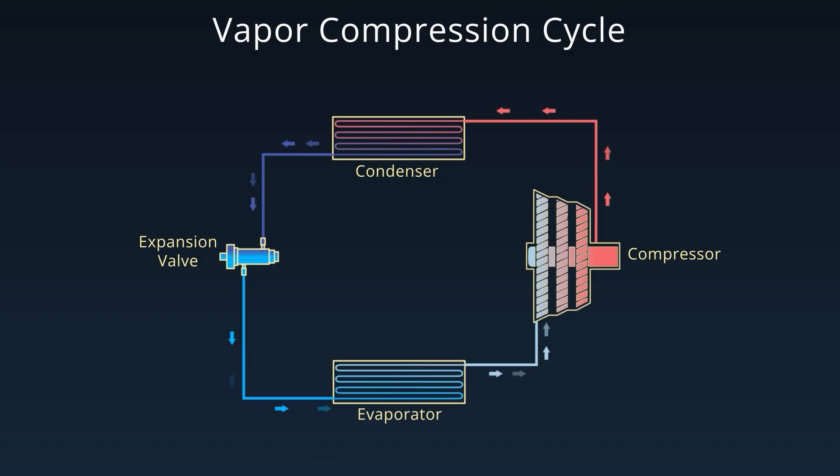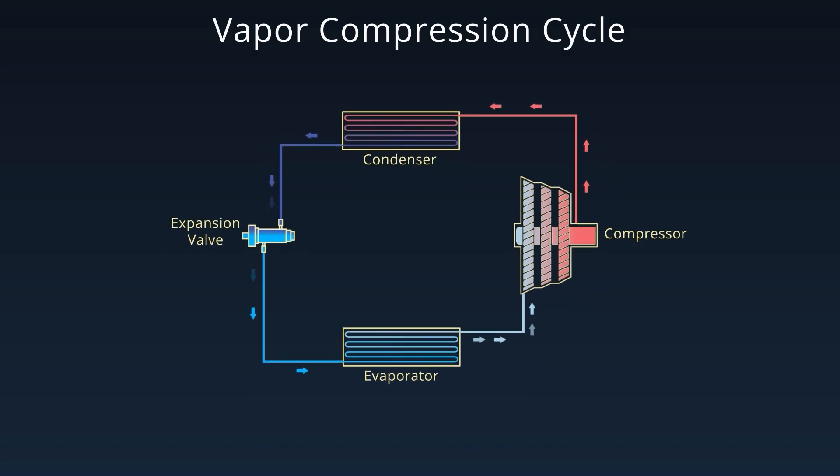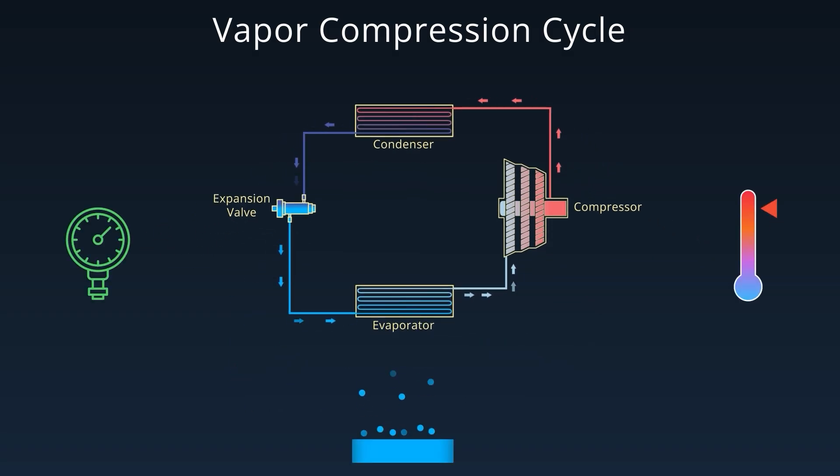The refrigerant moves through these components in a closed loop, changing pressure, temperature, and phase to move heat from one place to another.